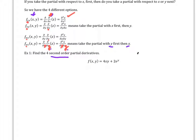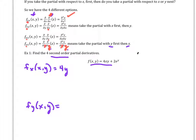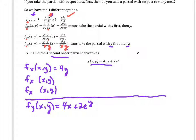Here we want to find the four second-order partial derivatives of this function. First, taking the partial with respect to x, I just get 4y. Taking it with respect to y gives 4x plus 2e^y. Now for the second-order partials: doing x then x, I don't see an x in the first partial, so I get zero. Doing x first then y second, I get four.